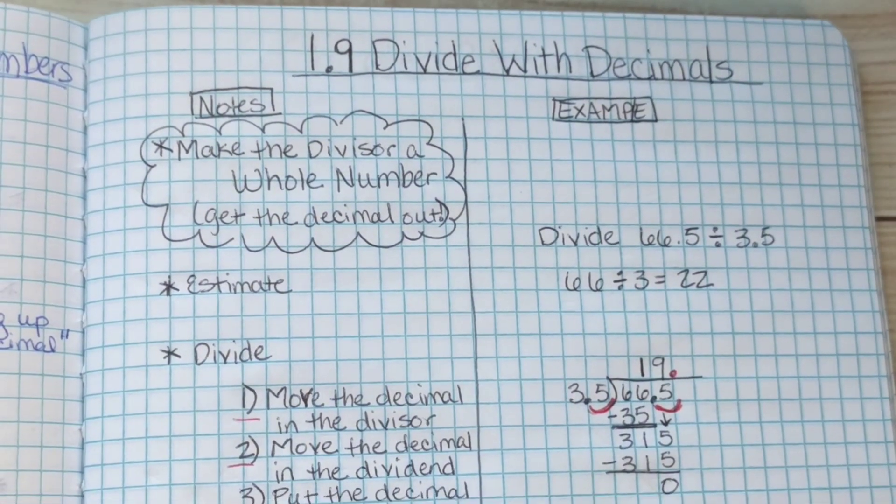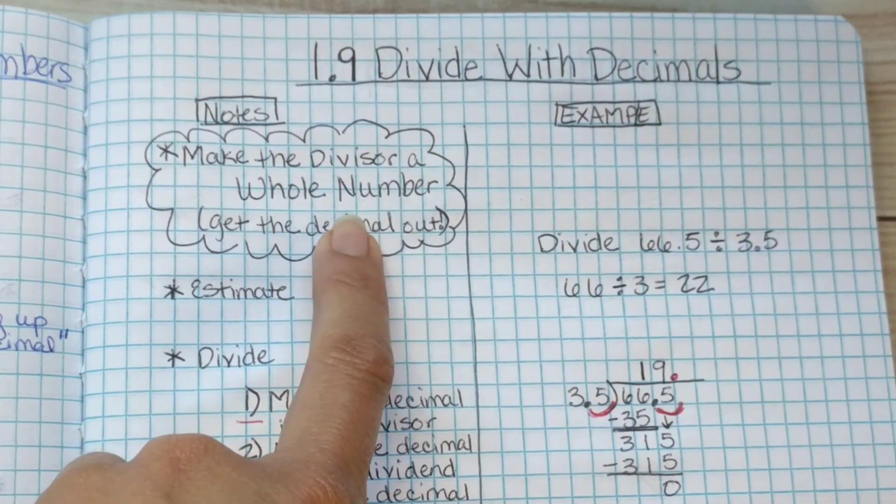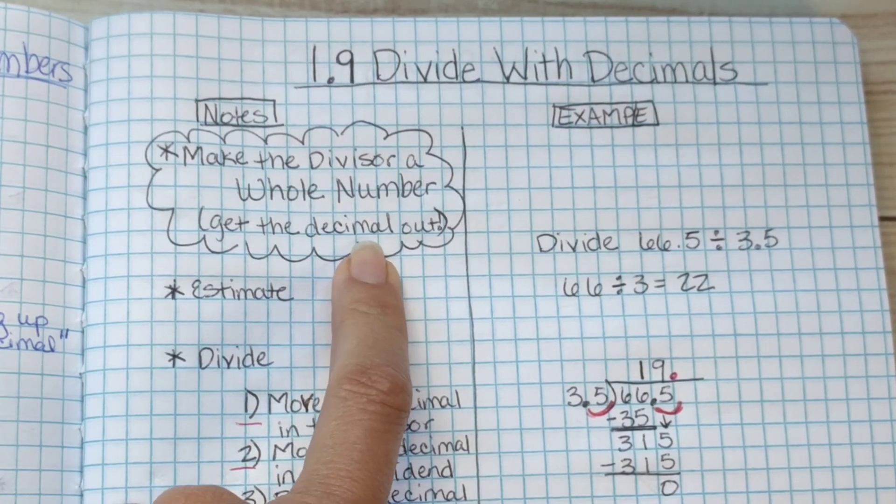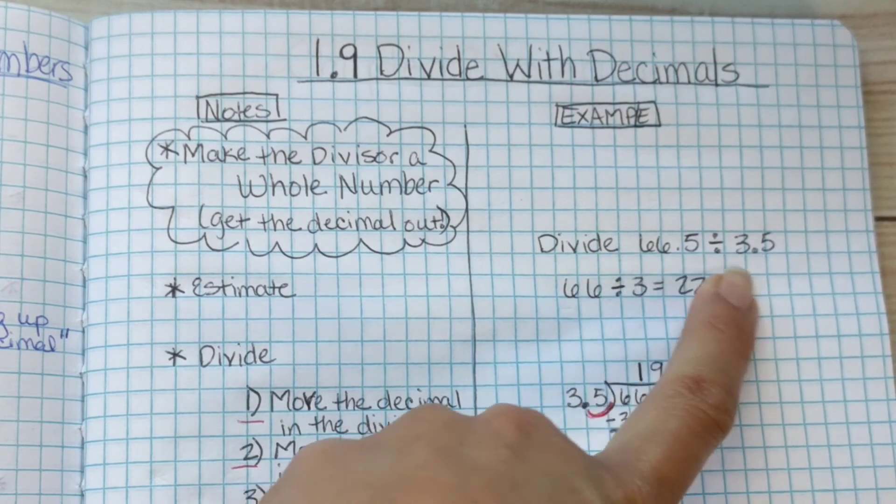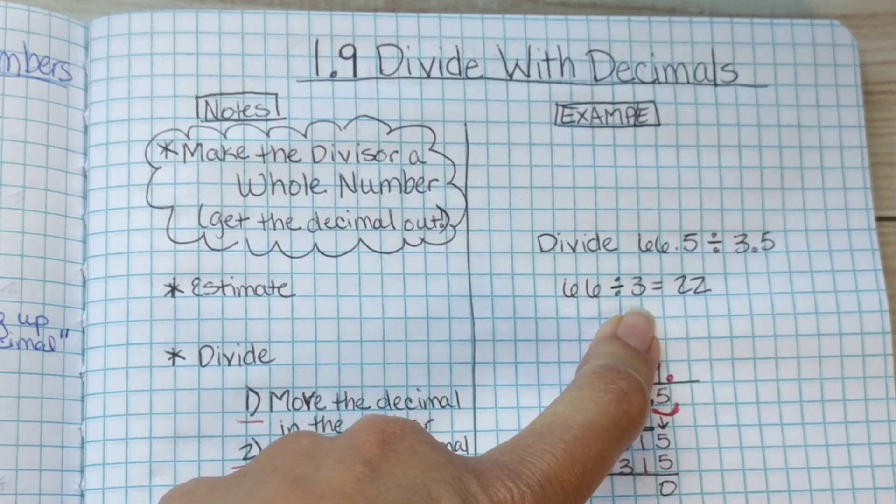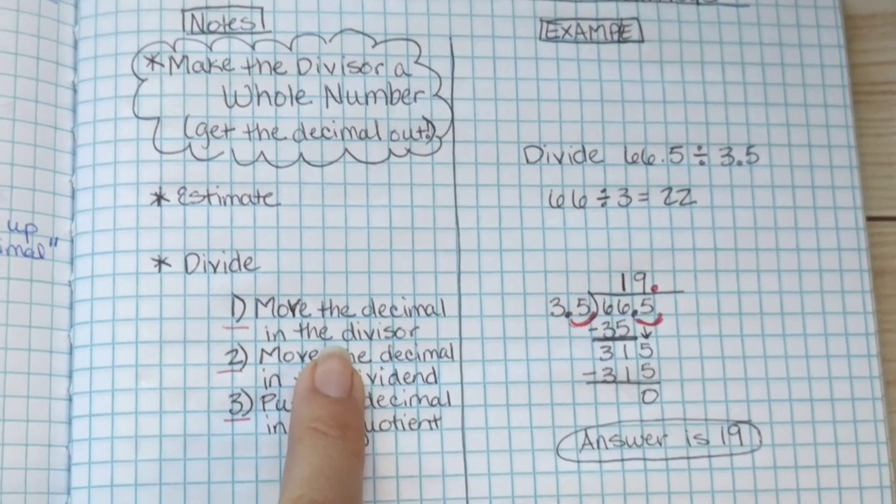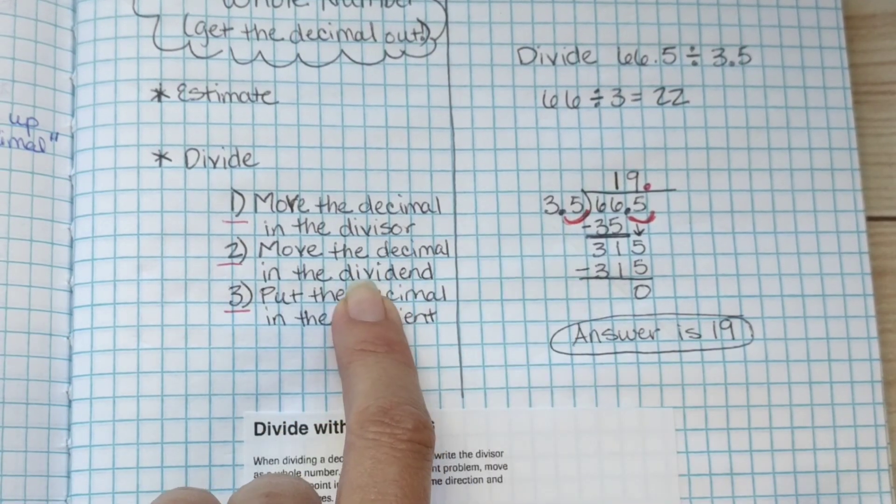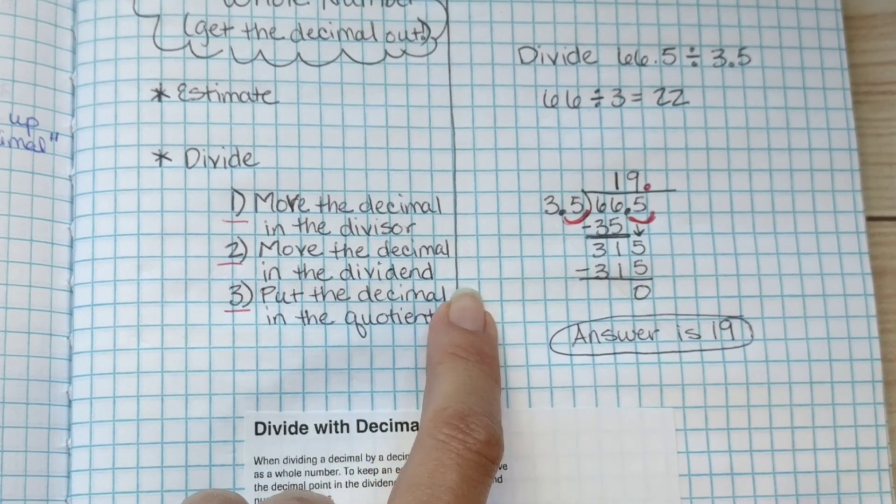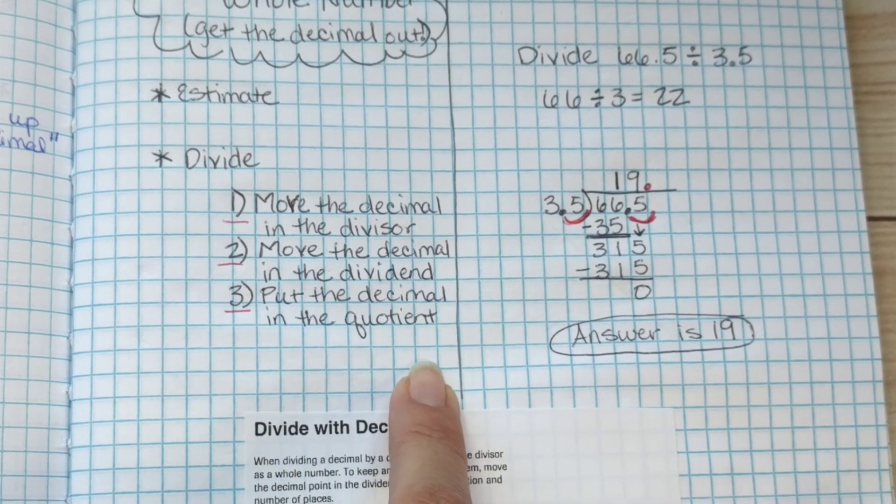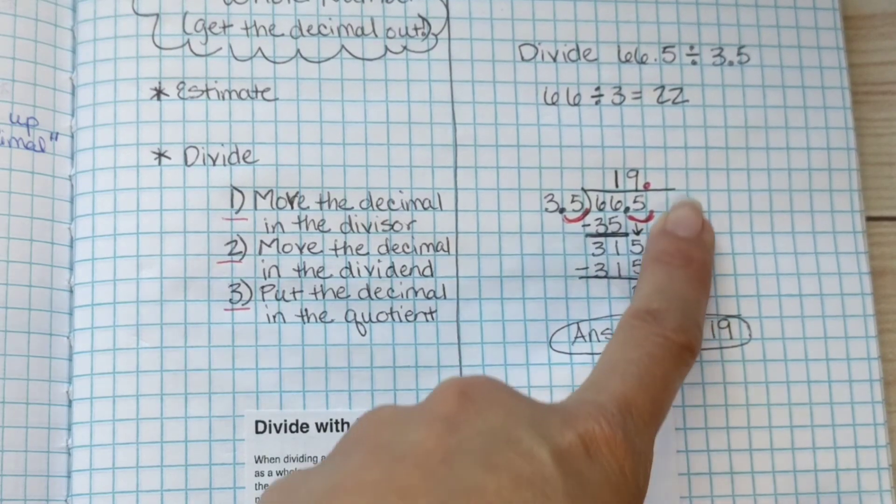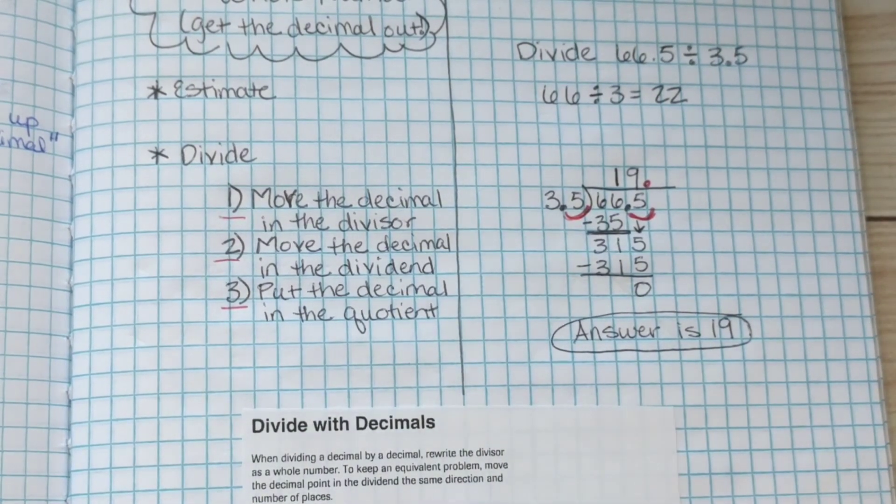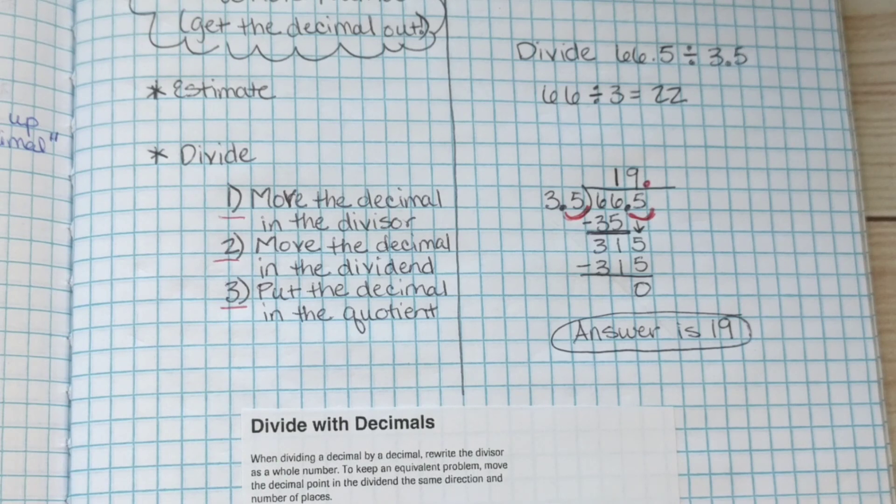Let's take a look at our notes. 1.9, Divide with decimals. Make the divisor a whole number, so you're going to get that decimal out. The way that you do that is by multiplying by a factor of 10. So our problem is divide 66 and 5 tenths by 3 and 5 tenths. First we estimate. Estimating gives us an idea of if we're in the ballpark. Then we go ahead and divide. Move the decimal in the divisor, move the decimal in the dividend. I should add to these notes and say the same number as we moved it in the divisor. Then put the decimal in the quotient. In this case, there's nothing behind, so that's a zero, so the answer is 19. Take a look at your notes in the PDF form.